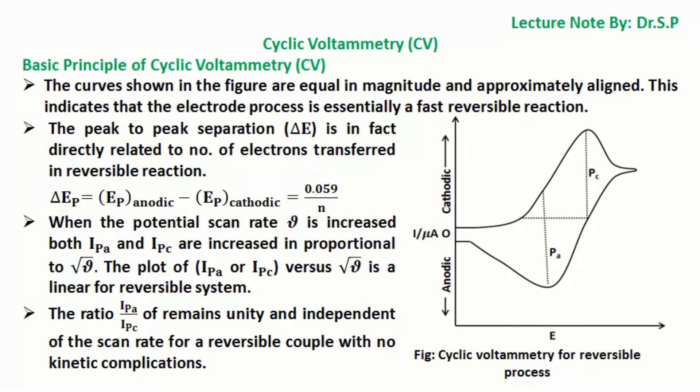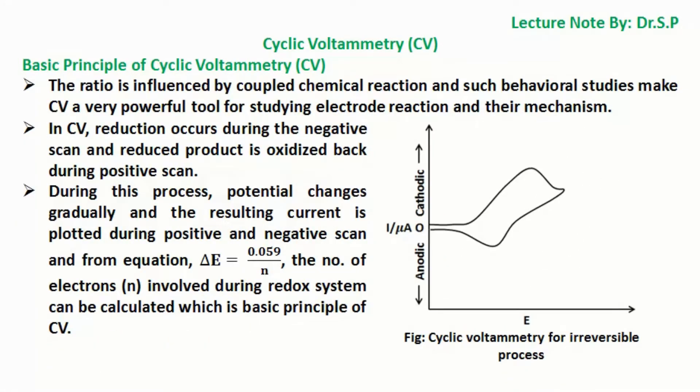The ratio of IPA by IPC remains unity and independent of the scan rate for a reversible couple with no kinetic complications. The ratio is influenced by coupled chemical reactions and such behavioral studies make CV a very powerful tool for studying electrode reactions and their mechanisms.